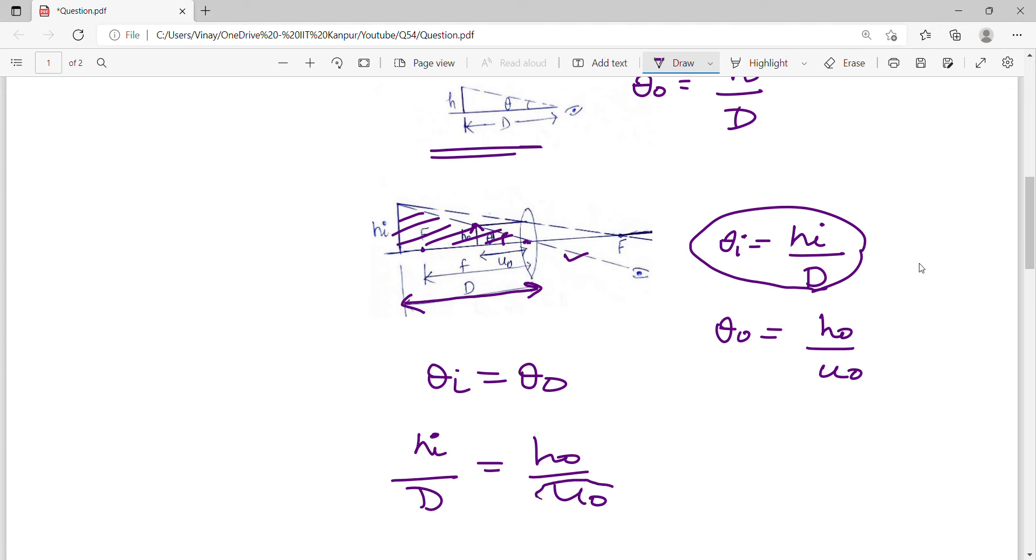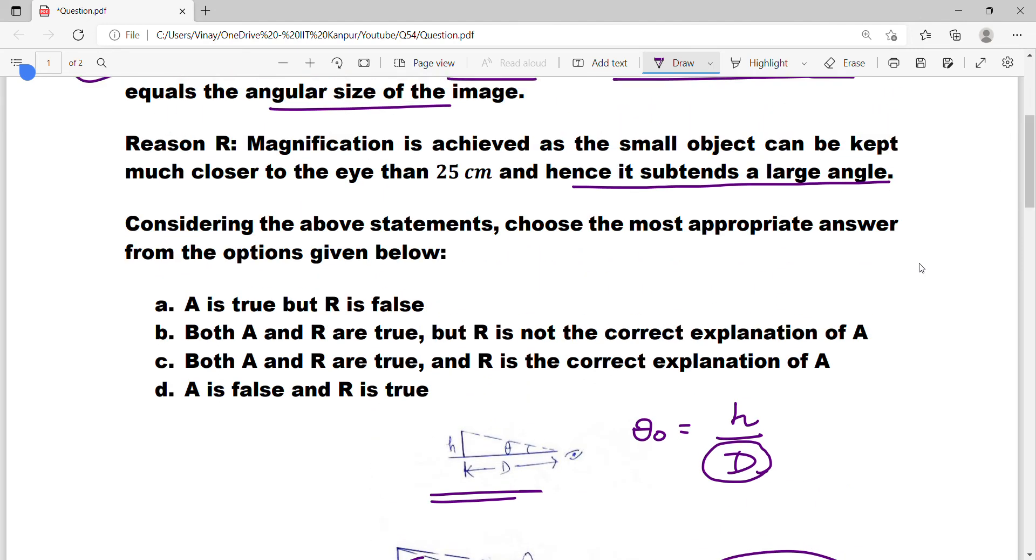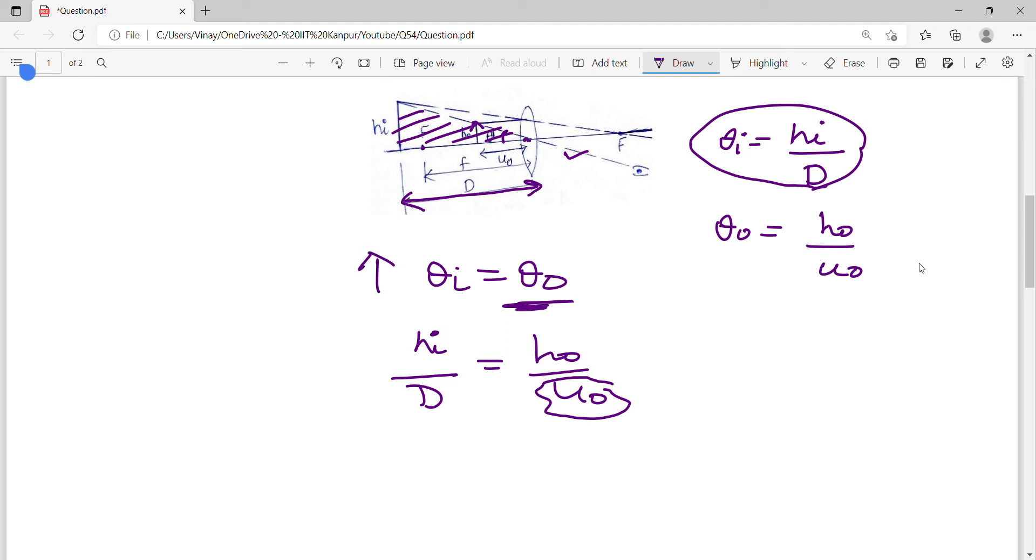Theta naught is equal to h upon d. If you reduce the value of d, where are you keeping the object? At less than d distance. The question says closer to the eye than 25 cm. You're keeping the object at less than 25 cm. D is actually 25, so d is less than 25. The denominator is decreasing, so theta naught will increase. If theta naught increases, theta i will also increase.